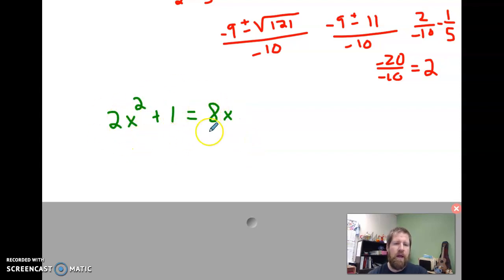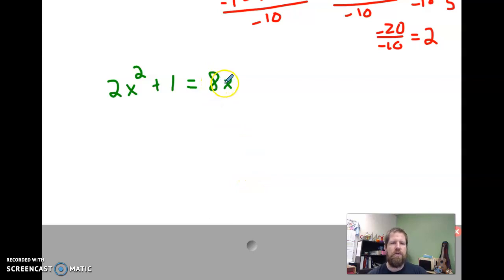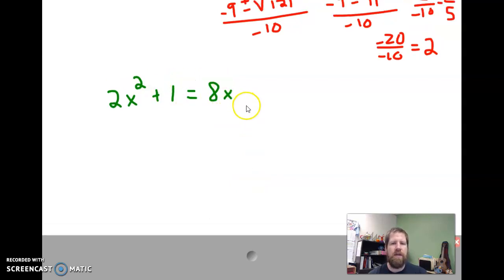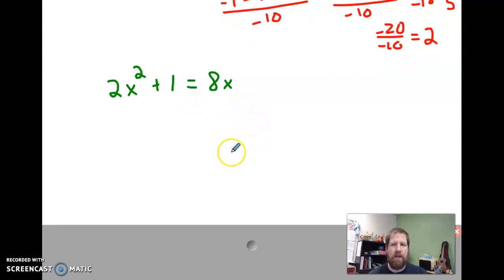Sometimes we don't have a quadratic equation that starts off in the standard form either. So, it is important to make sure you put it into standard form first. Otherwise, you can get the signs backwards on your values when you try and plug it into the quadratic formula. I start off by getting it all on the same side, subtract 8x, subtract 8x, 2x squared minus 8x plus 1 is equal to 0. It's in standard form.